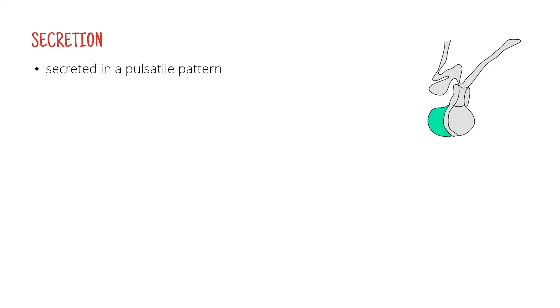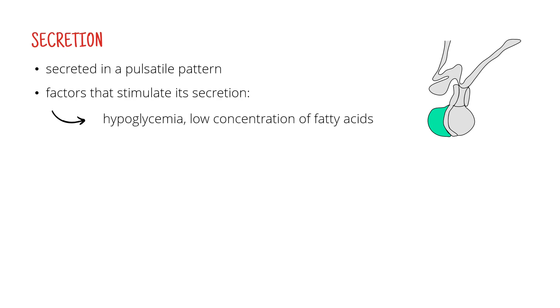Now we are going to look at the way growth hormone is secreted. Growth hormone is secreted from the anterior pituitary and it is said to be secreted in a pulsatile pattern, which simply means that not the same amount of the hormone is secreted all the time. There are certain factors that stimulate its secretion like hypoglycemia — low glucose concentration — and low concentration of fatty acids. That makes sense, since we know that growth hormone decreases absorption of glucose and causes its further production and it releases fatty acids from adipose tissue to the blood. Other factors are also excitement, exercise, but also trauma.